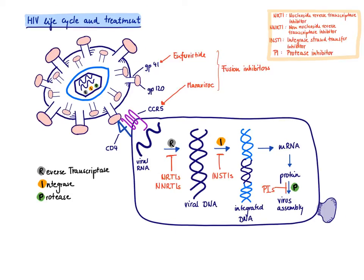How could we treat HIV? Viruses in general are much more difficult to treat than bacteria because a virus is neither a prokaryote nor a eukaryote — it is not a self-living organism and mostly uses the host machinery. That's why we don't have broad-spectrum antivirals: the virus hides inside our own cells using our own machinery, and we obviously cannot target that.